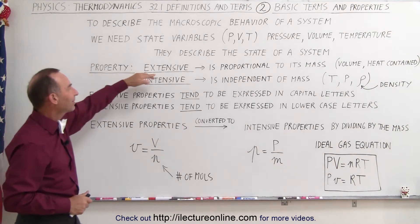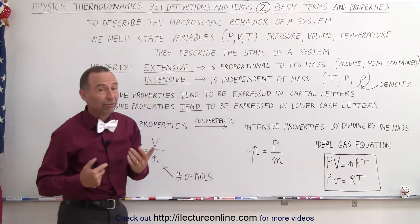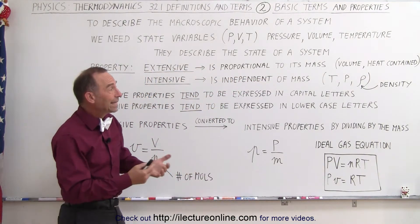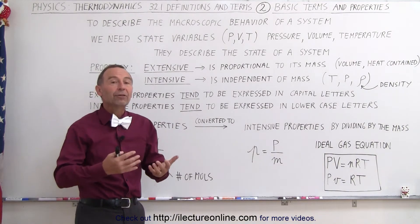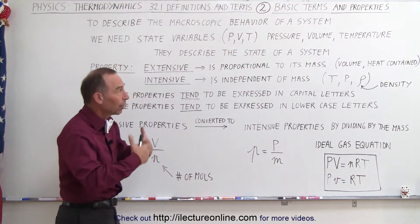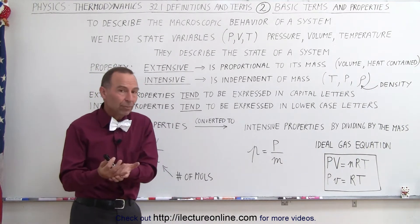When a property is extensive, it is proportional to its mass, like volume or heat contained within an object. For example, when you double the amount of material you have, you typically double the volume. If you have a larger object at the same temperature, it will contain more heat.